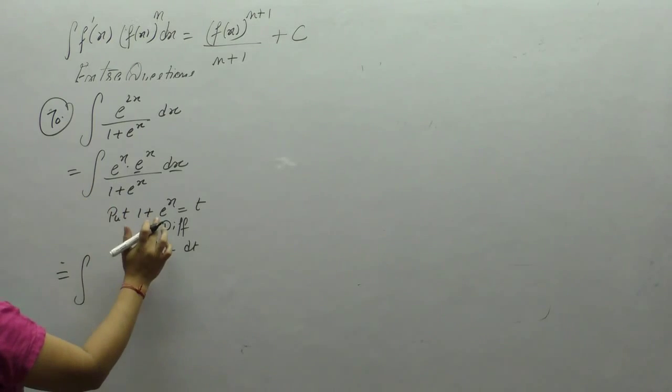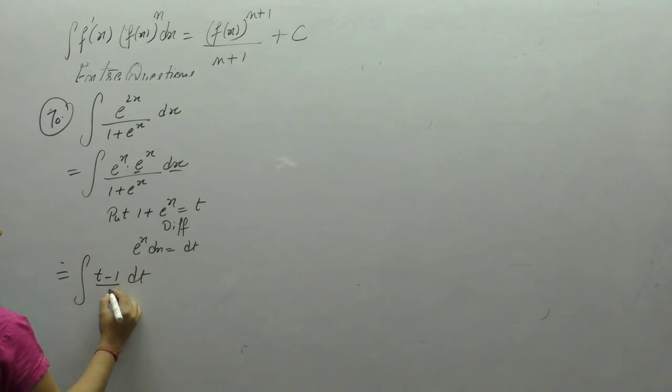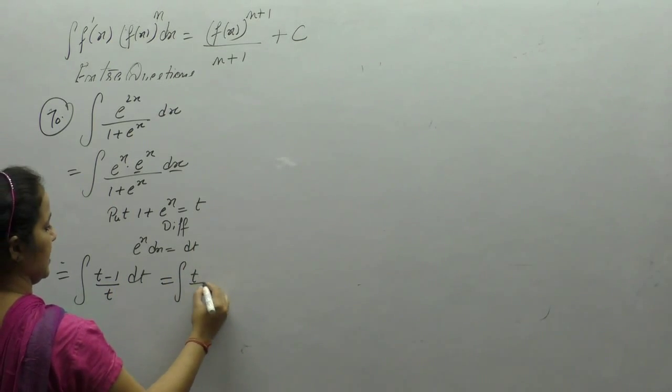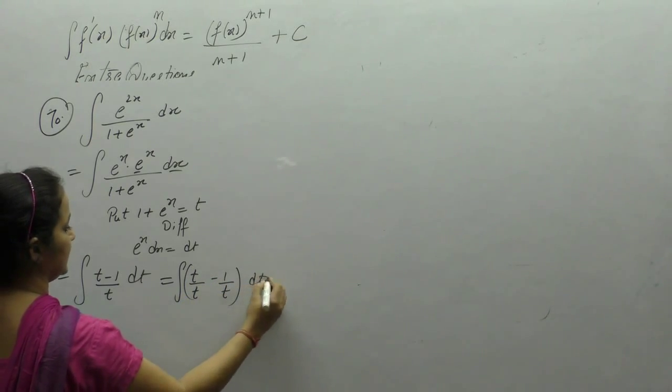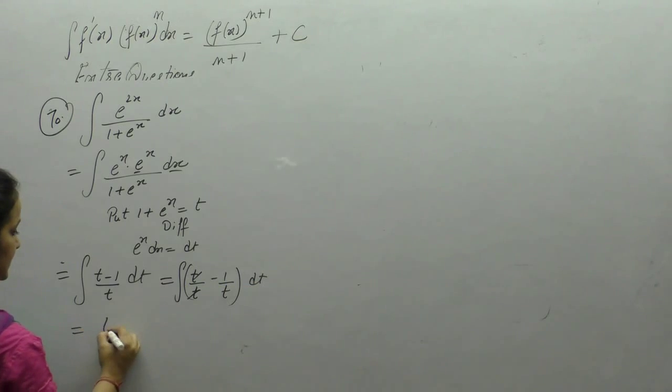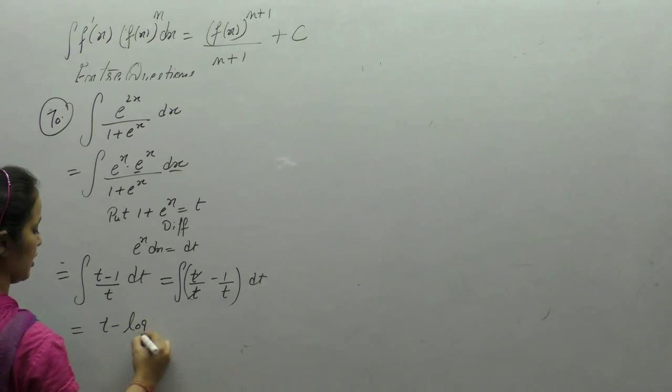Put the value of e to the x as t minus 1 and 1 plus e to the x as t. Now separate the terms: t upon t minus 1 upon t. Integral of 1 is t and 1 upon t is log of t.